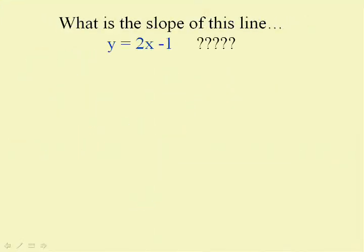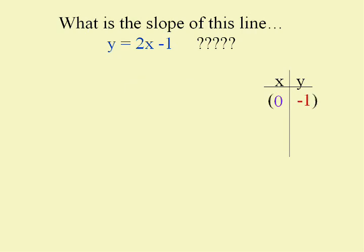I want to lead you into the next lesson. I'm going to give you only an equation — y equals two x minus one — and I want you to tell me what the slope is. You can use that equation to get two points. I'll put in zero for x: y equals two times zero minus one, which is negative one. Then I'll put in one for x: y equals two times one minus one, which equals one. Now I've used the equation to find two points with no picture, and once I have two points I can use the formula.